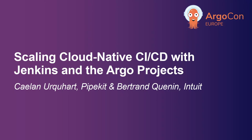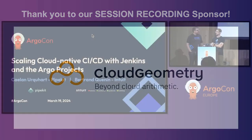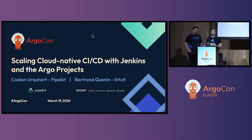Bonjour, Argonauts. What's going on? We're here to talk about scaling cloud-native CICD pipelines with Jenkins and Argo. Last ArgoCon, Bertrand and I presented on how to migrate from Jenkins to Argo for CI and some of the pros and cons of using Jenkins and Argo on Kubernetes. Today we're going to go a level deeper and talk about scaling both Jenkins and Argo-driven CICD pipelines.